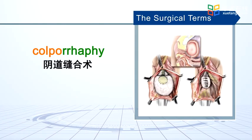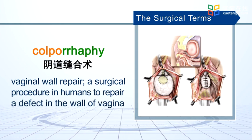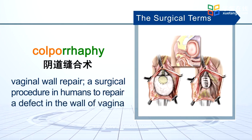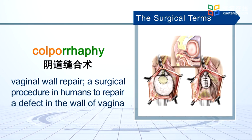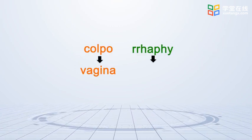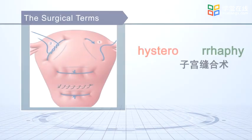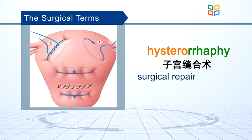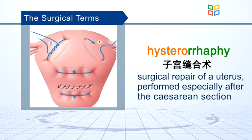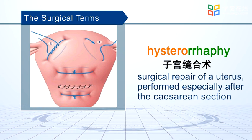Colporrhaphy: vaginal wall repair, a surgical procedure in humans to repair a defect in the wall of the vagina. Hysterorrhaphy: surgical repair of the uterus, performed especially after a caesarean section.